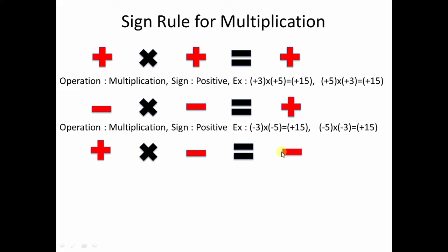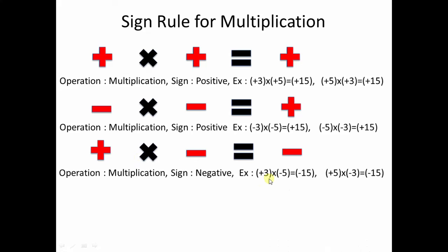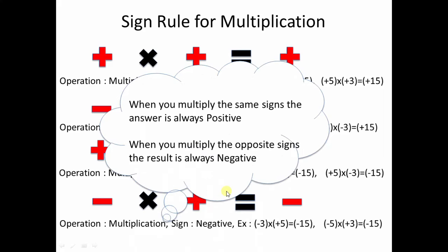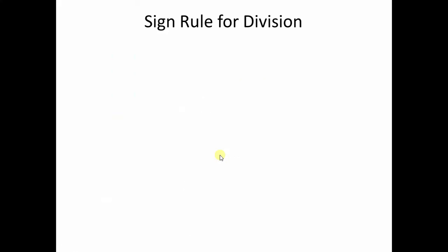A positive number multiplied by a negative number gives a negative result. For example, plus 3 times minus 5 is minus 15. A negative number multiplied by a positive number also gives a negative result — minus 3 times plus 5 is minus 15. To summarize: when you multiply the same signs the answer is always positive, and when you multiply opposite signs the result is always negative.